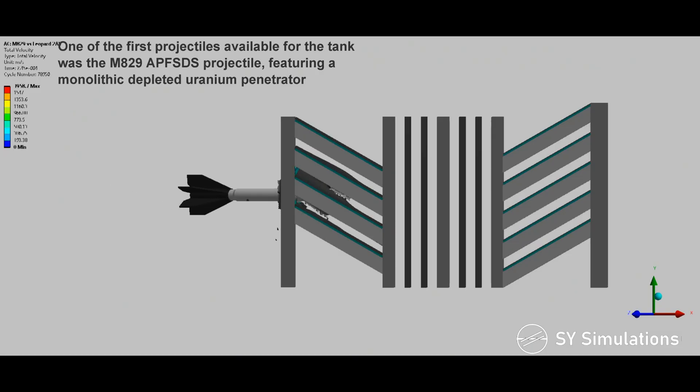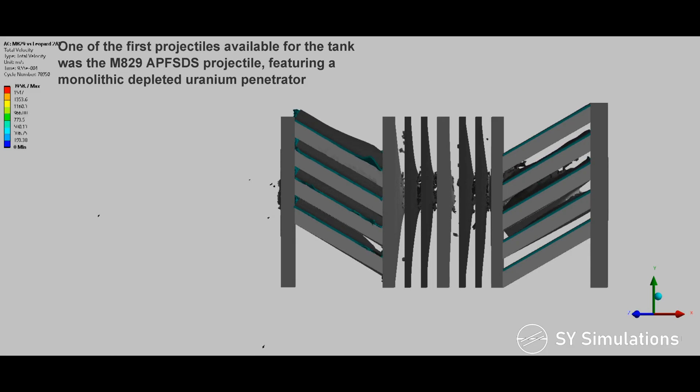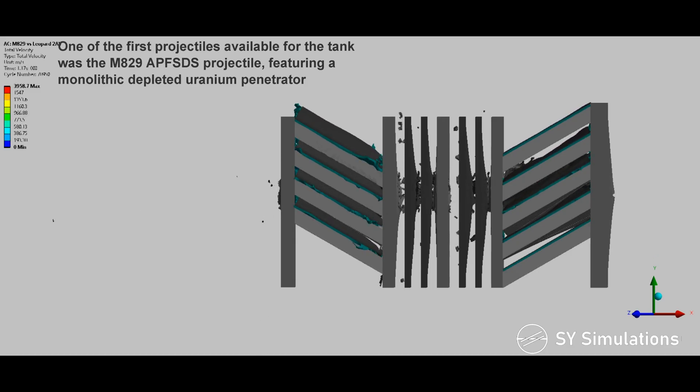One of the first projectiles available for the tank was the M829 armor-piercing fin-stabilized discarding sabot projectile, featuring a monolithic depleted uranium penetrator.